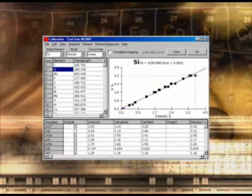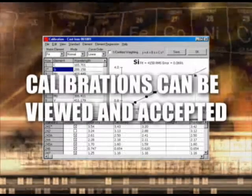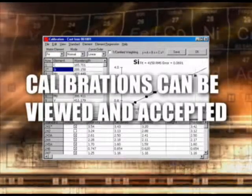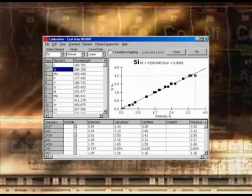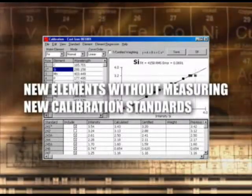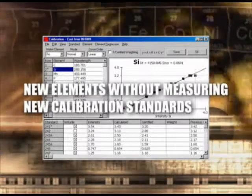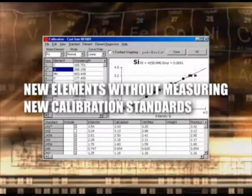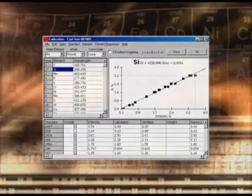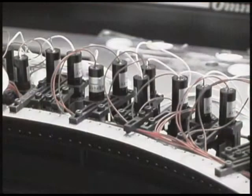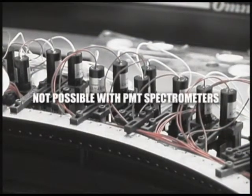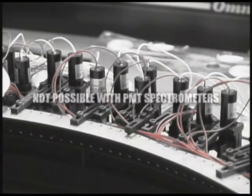Because the CCD spectral data for each standard analysis is saved, a new calibration for another element or element line can be added to the system without having to rerun any standards. This flexibility is not possible with PMT-based systems, which only measure specified wavelengths.